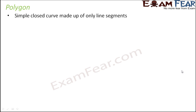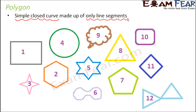A polygon is a simple closed curve made up of only line segments. It can never be an open curve, and at the same time it should never be a non-simple curve. Another criteria is that it has to be made up of only line segments. Many line segments can form a polygon.